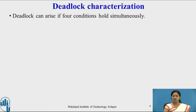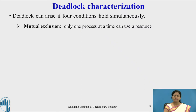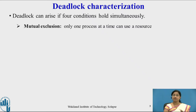In deadlock characterization, we are going to study four necessary conditions which are necessary for deadlock to occur in the system. Deadlock can arise if four conditions hold simultaneously in the system. The first is mutual exclusion. In this case, only one process at a time can use a resource. If the resource is already used by a process, then the next process will enter a waiting state.